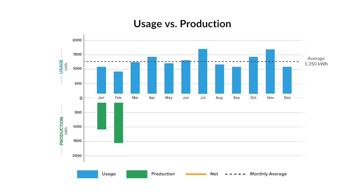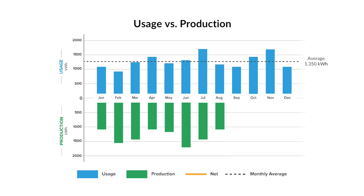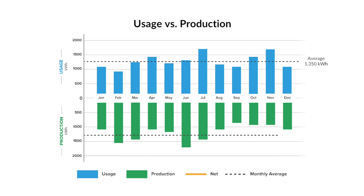Since the production of your system will also fluctuate monthly, you will want to find that monthly average your system produces as well. By using these averages, the net of your usage and production will cancel out at the end of the year.